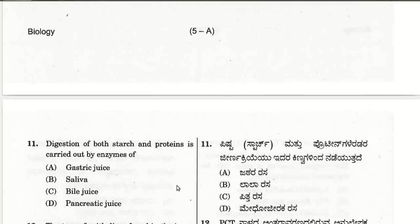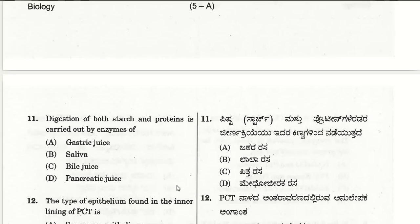Digestion of both starch and proteins is carried out by enzymes of pancreatic juice. Gastric juice is partial. Saliva also digests only starches. Bile juice brings about emulsification of fats and does not contain enzymes.